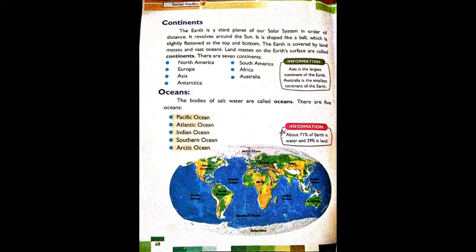In our solar system there are eight planets, and among them Earth comes at number three. The center of the solar system is the Sun, and all planets move around the Sun. Earth revolves around the Sun. It is shaped like a ball, which is slightly flattened at the top and bottom.